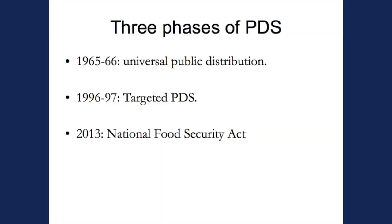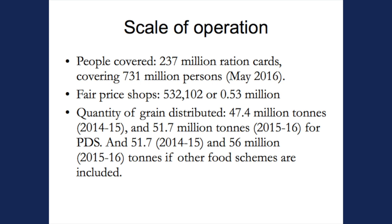The third major change in the last 60 years is 2013, when we have — I think India is unique — we have the National Food Security Act, which makes access to food a basic human right. Although it's somewhat diluted from what some of us would have wanted, it now assures subsidized food to about two-thirds of the Indian population.